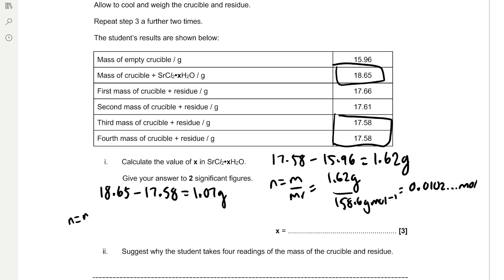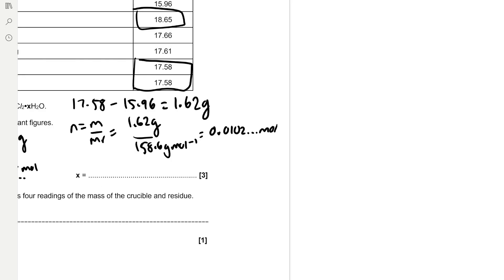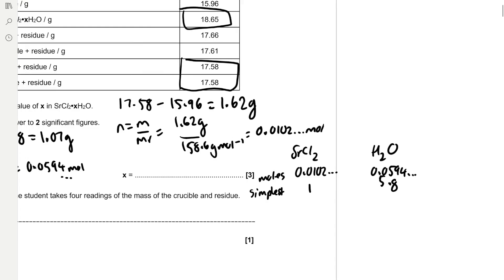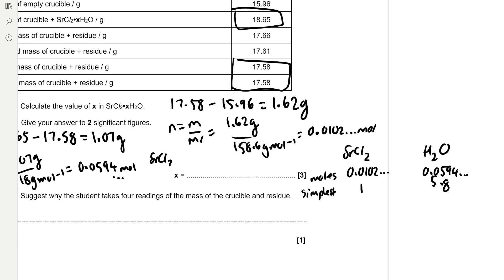To find the moles of water we use moles = mass / Mr: 1.07 g divided by 18 g/mol. Then we use the same technique as finding the empirical formula to find the value of X — we divide each by the smallest number of moles, which is the moles of strontium chloride (0.0102). That gives 1 for SrCl₂ and 5.8 for H₂O, so the formula is SrCl₂·5.8H₂O, giving X = 5.8.